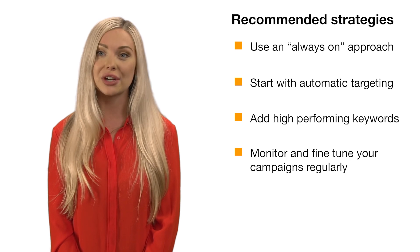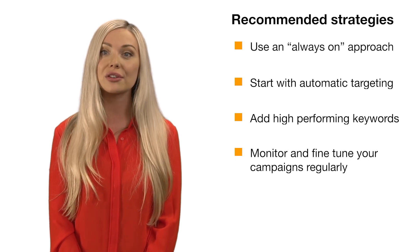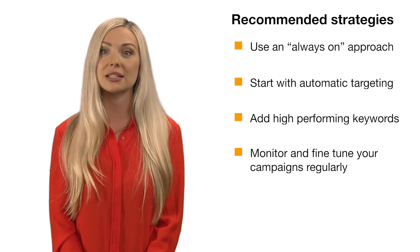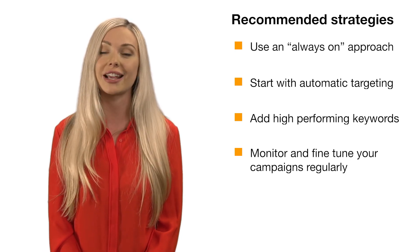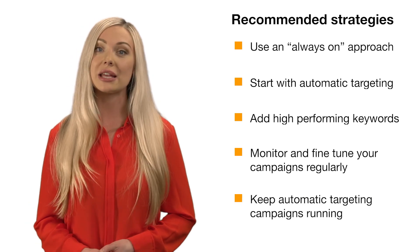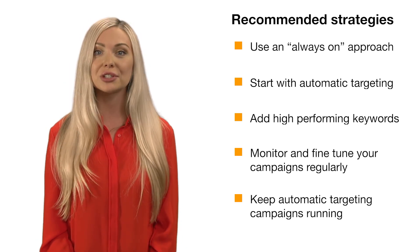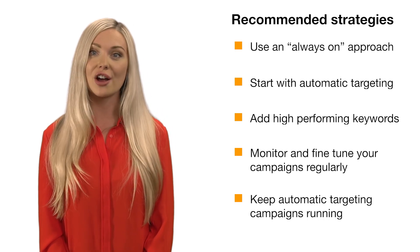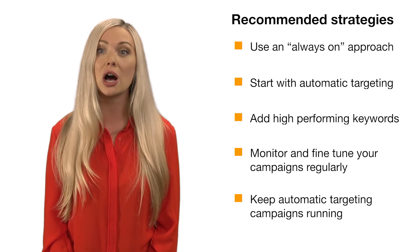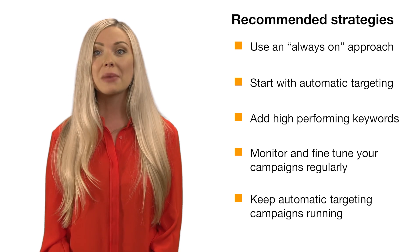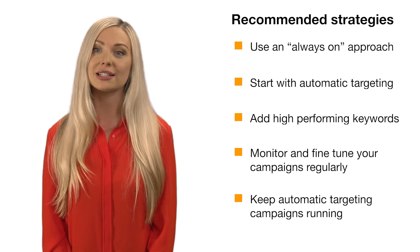Monitor and fine-tune your campaigns regularly — click into Campaign Manager at least one to two times per week to review campaign performance, adjust bids on top performing keywords in your manual campaigns to meet your business goals, and increase your budget if you're running out of daily budget. Keep automatic targeting campaigns running. As automatic targeting captures new high-performing keywords, you can add them to your manual targeting where you can set a custom bid at the individual keyword level. Also consider lowering your auto-targeted bid at this stage to help control your advertising cost of sale, and invest more in the manual targeting campaign, which offers more precise targeting and a more robust bidding strategy.